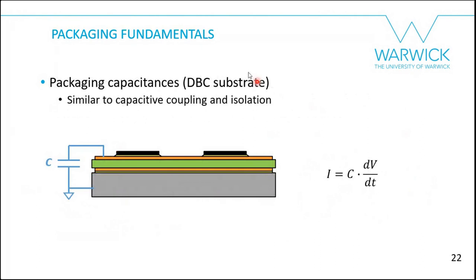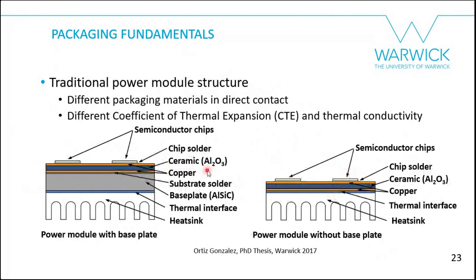Parasitic capacitances also arise from the DBC substrate — similar to capacitive coupling and isolation of gate drivers. If you have two copper areas on the DBC with a ceramic insulating layer between them, that's a capacitor. If the base plate is connected to ground and the top side is connected to the converter output — which oscillates between the DC link and ground — you are charging and discharging this capacitor. With fast dV/dt you get current through the DBC substrate, similar to bearing currents in motors.